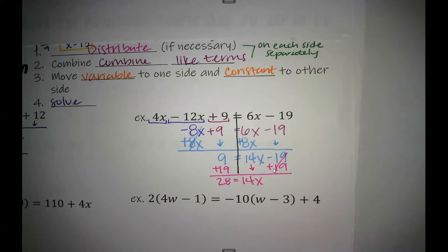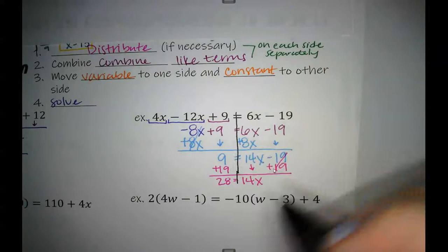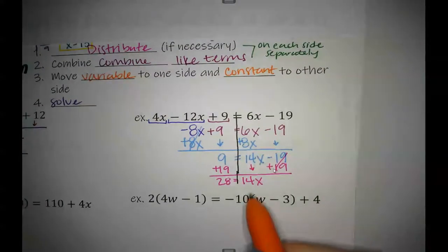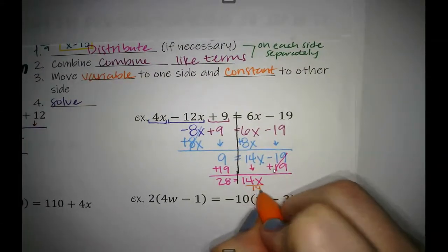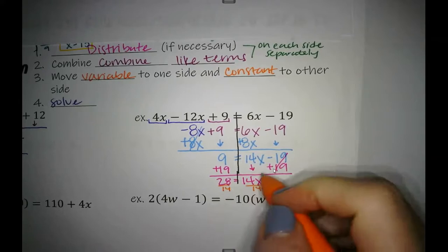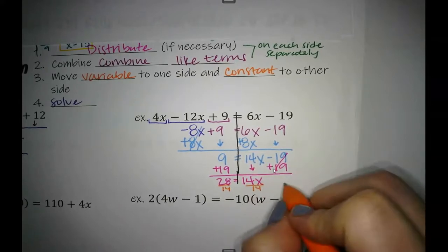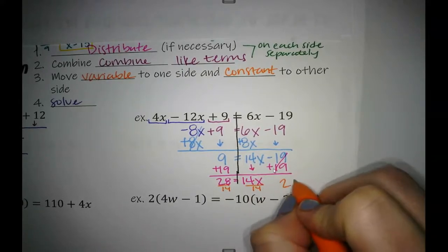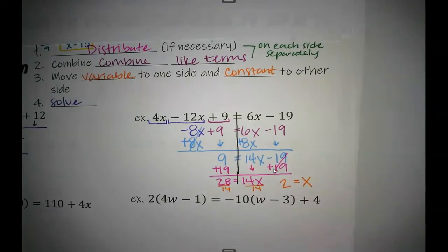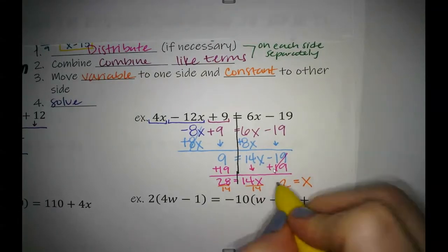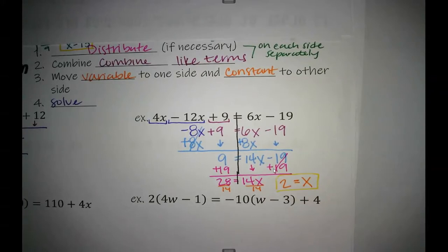I'm still dealing with this multiplied 14, so I'm going to divide both sides by 14. 28 divided by 14 is 2. 14 divided by 2 is x. So in this case, x is going to equal 2.